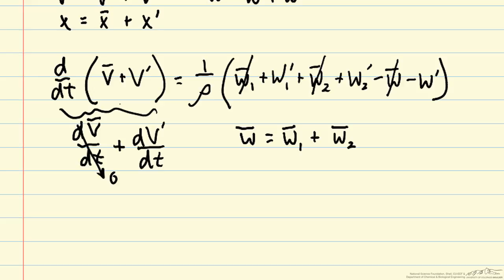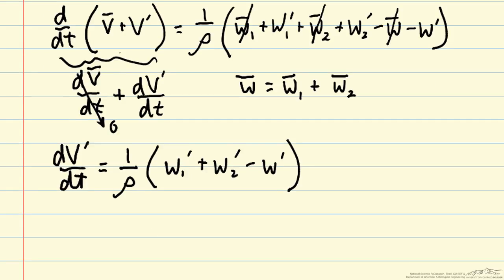Then we are left with the equation. This happens to look just like the original equation, except we have primes on all of our terms on v and on the w's. The reason this looks mathematically similar to the original equation in deviation variables is because the original equation was linear. But when we have a nonlinear equation, it's not going to look similar.